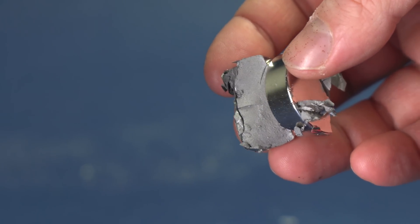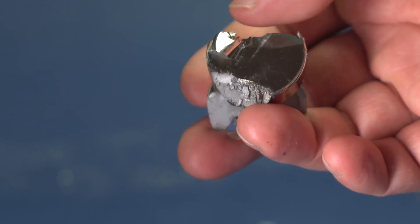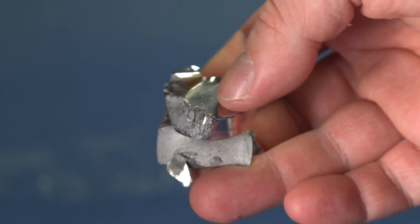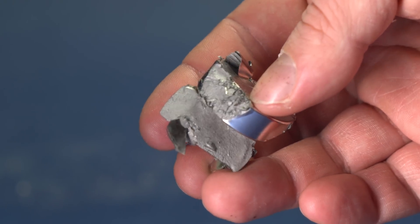To prevent corrosion, neodymium magnets are coated in a layer of copper and nickel, which is why they appear to be hard.